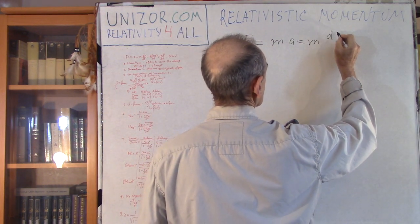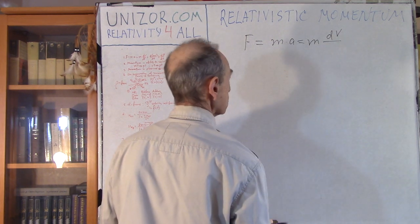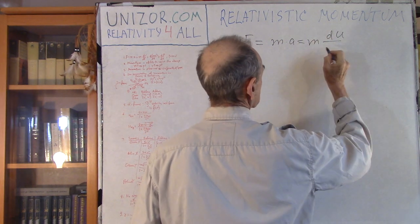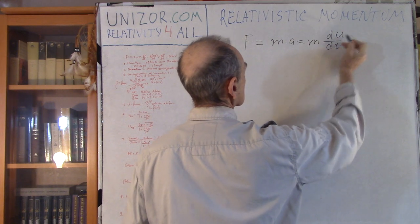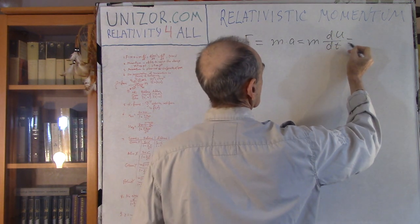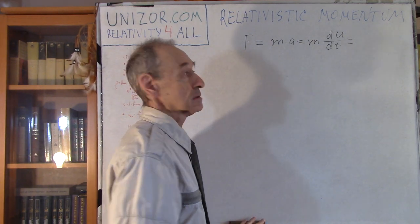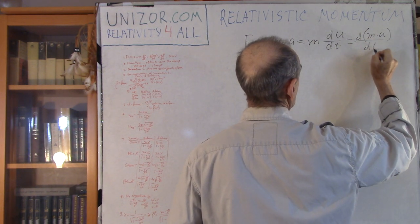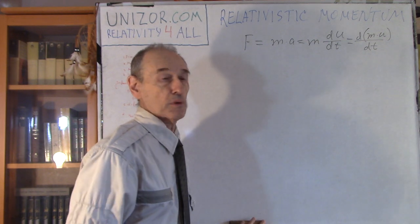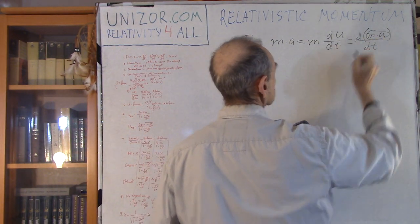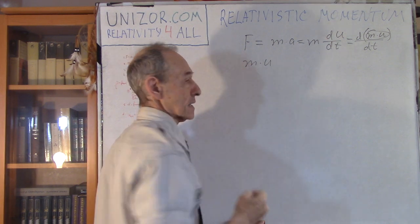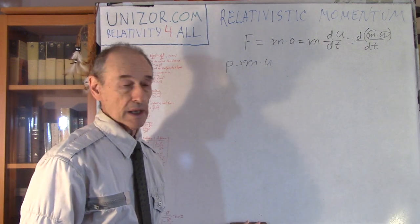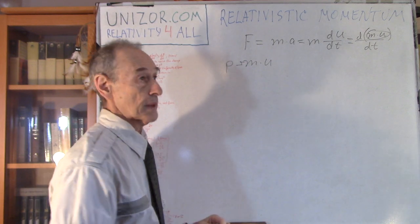So it's m times du by dt. I'll use the letter u just in case, because I'll do something else. u is speed, a is acceleration. m is a constant in Newtonian mechanics, so I can put d(mu)/dt — I put the constant into the differential. Mass times speed is basically the definition of something called momentum in Newtonian mechanics.